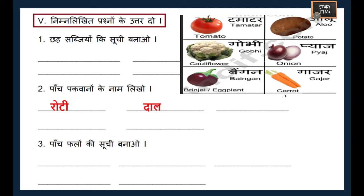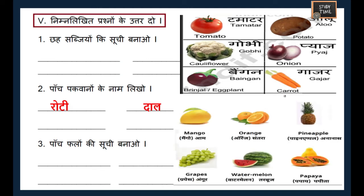For the list of five dishes (panch pakwanon ki suchi banao), you can write roti, dal, dosa, rice, or any other edible items. For the list of five fruits (panch falon ki suchi banao), you can choose mango, orange, pineapple, grapes, watermelon, or papaya — any five fruits.